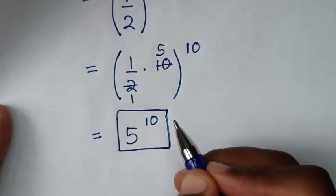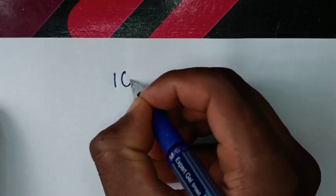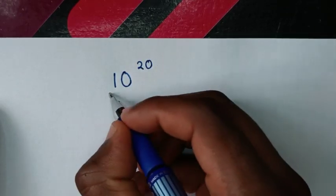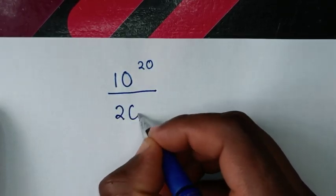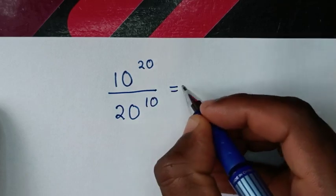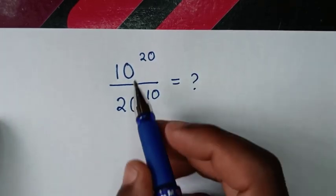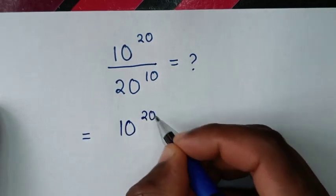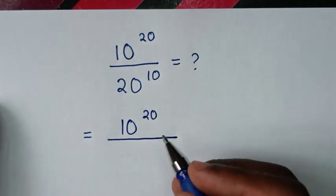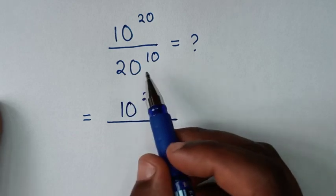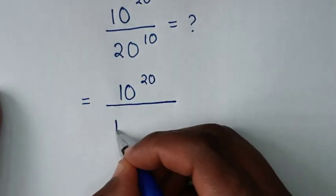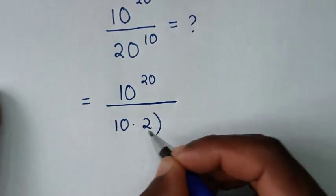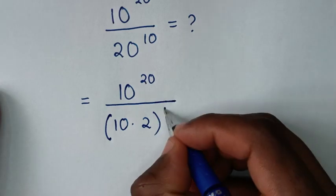Or, to solve in another method — second solution of 10 power of 20 over 20 power of 10. From here in the numerator we'll write the same, so it will be equal to 10 power of 20, then over 20 power of 10. Here 20 is the same as 10 times 2, then bracket this same power of 10.